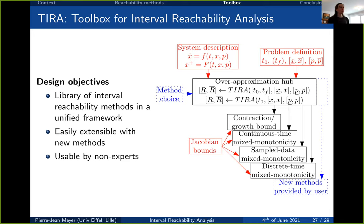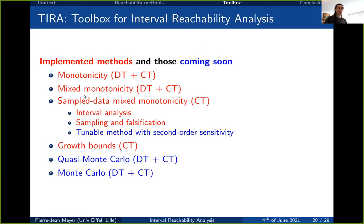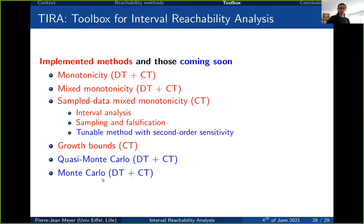The methods currently implemented in the public version of the toolbox include: monotonicity, mixed monotonicity for discrete time, continuous time, and the sampled-data version, and the growth bound approach. Work is underway to add the hybrid second-order sensitivity method and both quasi-Monte Carlo and Monte Carlo methods, which should appear on the toolbox website in the coming months.